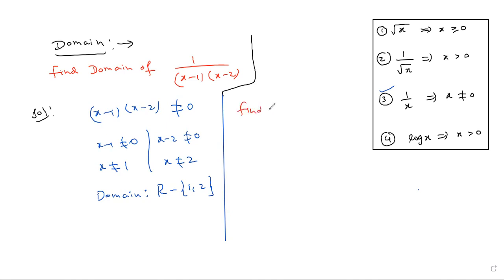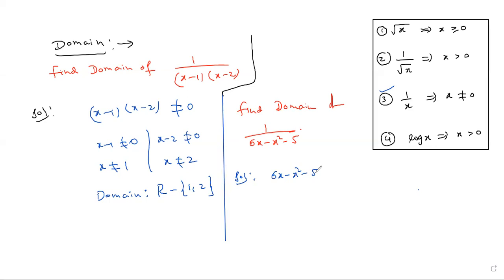Find the domain of the next question: 1 divided by 6x minus x squared minus 5. The denominator is a quadratic function. According to the condition, first write the domain condition: for 1 by x format, denominator not equal to 0. Writing this condition earns you one mark, because total answer depends on this step. Take denominator not equal to 0.